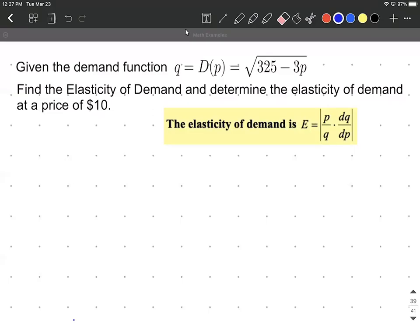Alright, elasticity of demand. What we have going on in this problem is we're given a demand function. Sometimes these are called Q for quantity, or D of P - these mean the same thing. But in our case, this is the square root of 325 minus 3P. We are asked to find the elasticity of demand at a specific price of $10.